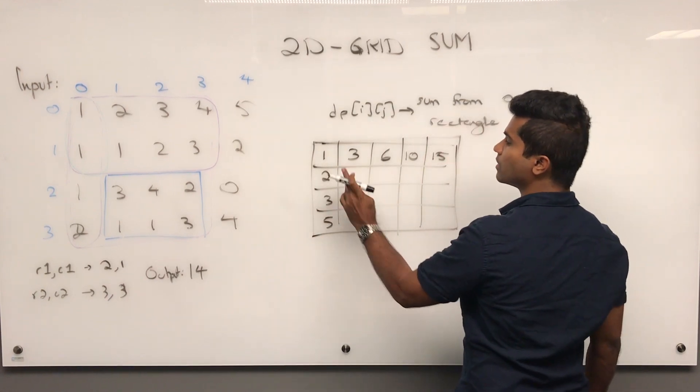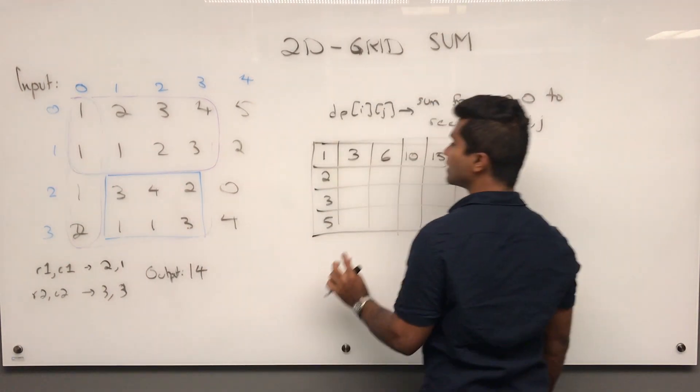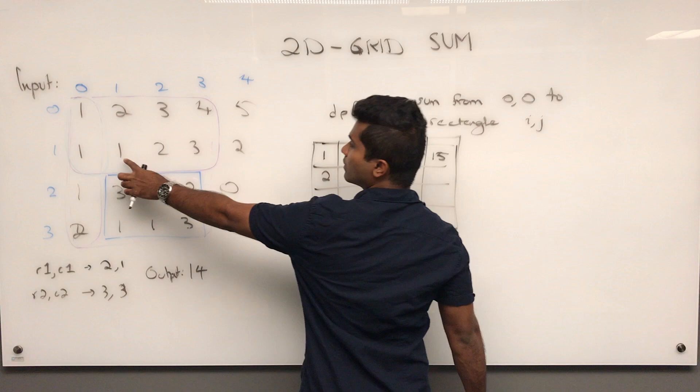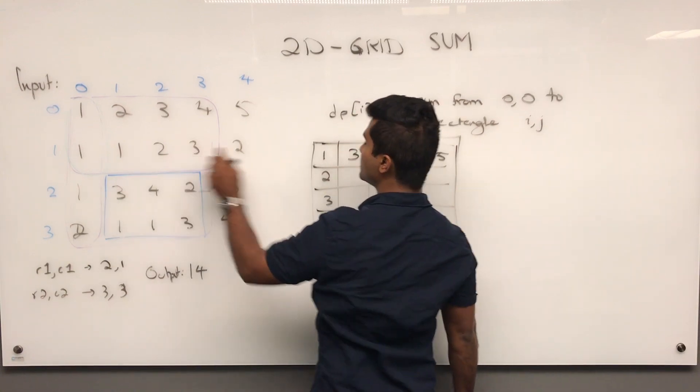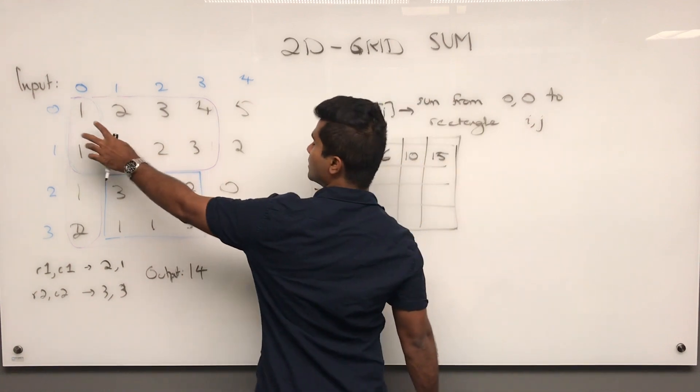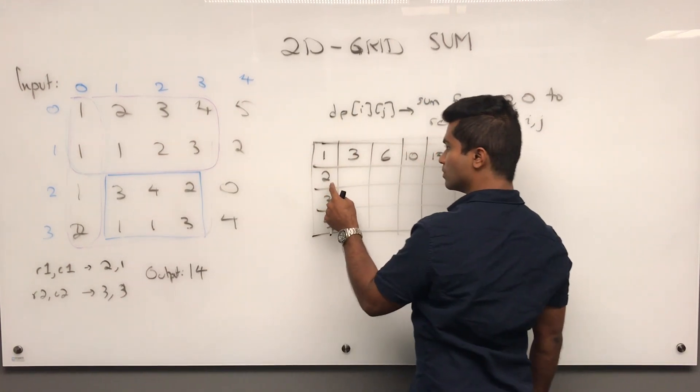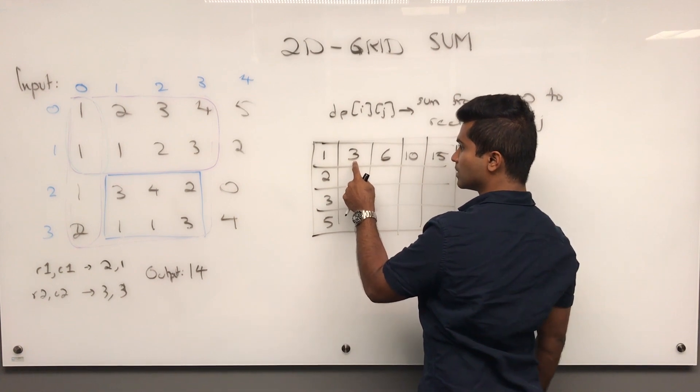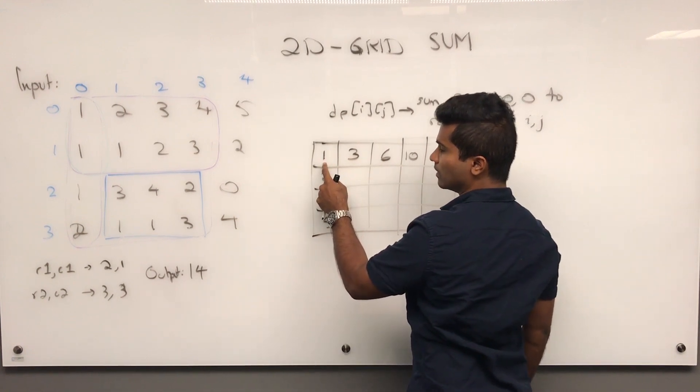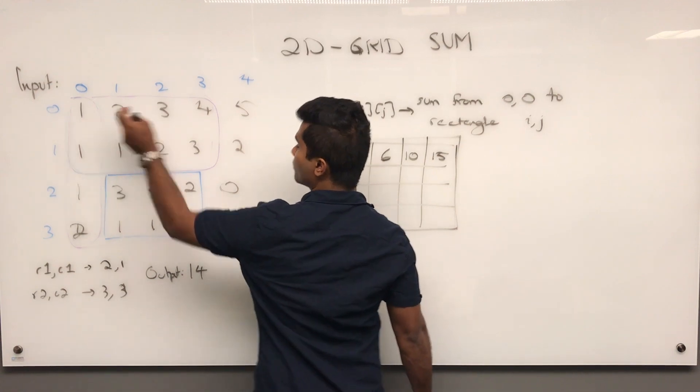So what is this going to be here? This is going to be the sum of these guys. So how do we get that? We take this one, 1 plus the DPs of 2 and 3 and then we subtract the DP of this guy. So 1 plus 2 plus 3, 6. 6 minus 1 is 5. Let's see if that adds up. 1, 2, 3, 5.